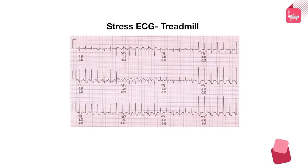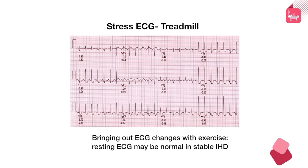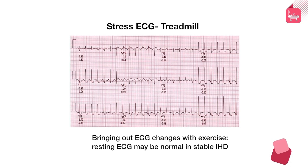In stable ischemic heart disease, there may not be much change on the resting ECG and you may have to stress the heart to provoke ischemic changes. An exercise stress test or treadmill test can demonstrate this: in a person with a normal resting ECG, increasing heart rate during walking can produce significant ST depression in multiple leads — including inferior and lateral leads — indicating underlying coronary artery disease, though without necessarily localizing the involved territory.